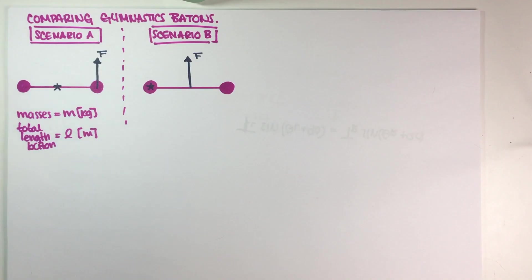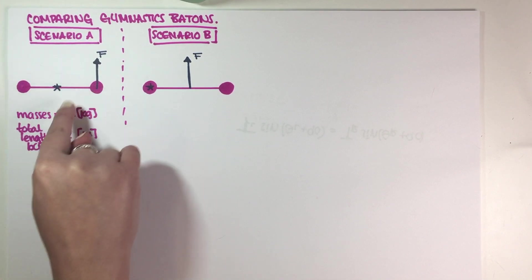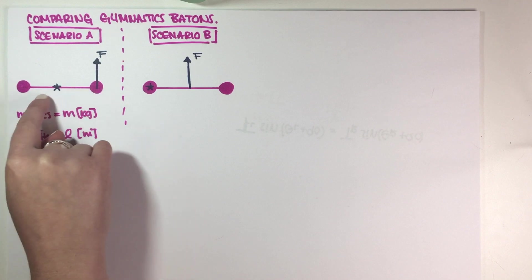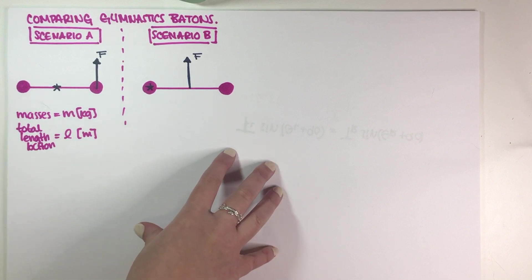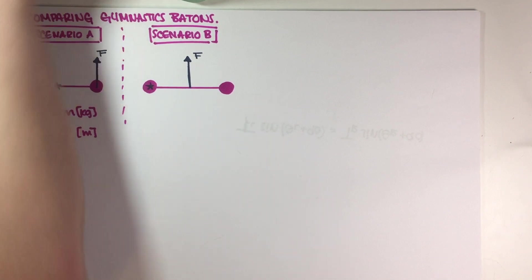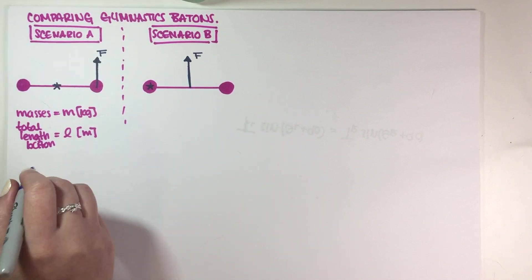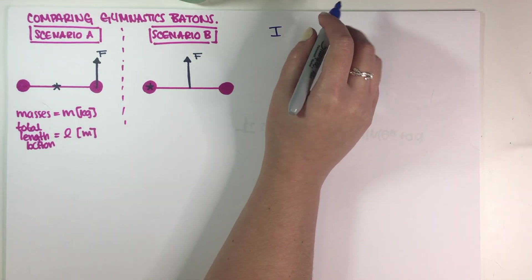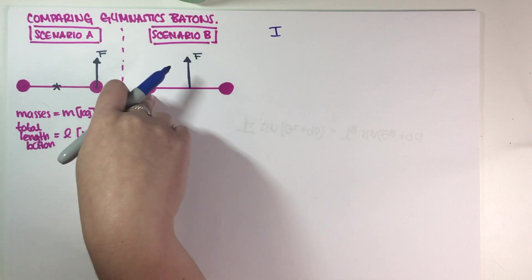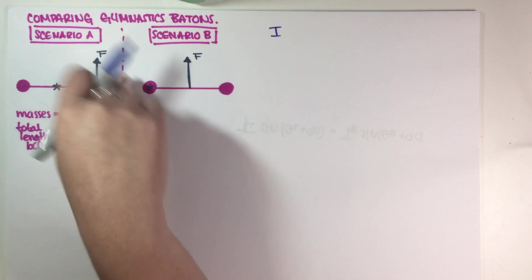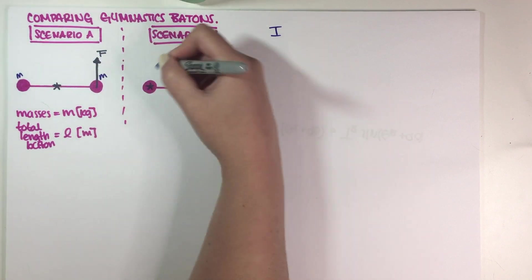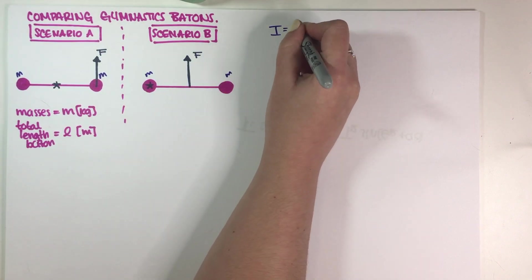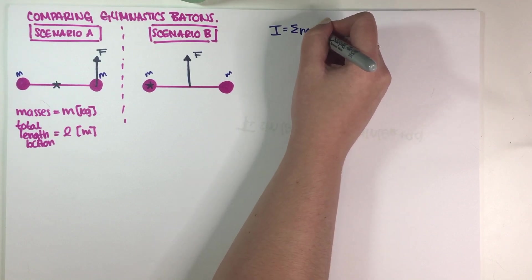I have all the necessary information written in the problem. Both masses have a mass of m, the total length is equal to L, and I need to compare some values. The first thing to compare is moment of inertia. We need to remember the equation for moment of inertia for point masses. The rod is massless, so we're only working with two masses on each scenario. The equation is the sum of m times r squared.